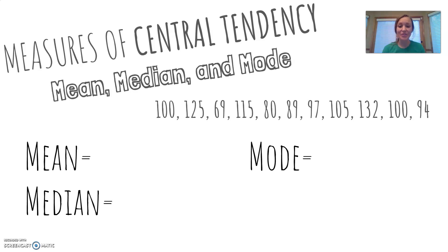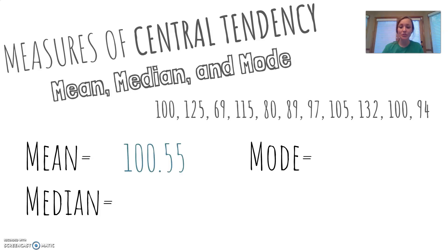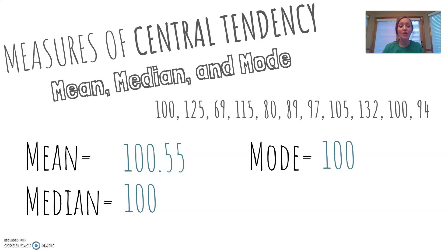If you are ready to check your answers: for the mean, if you added all the numbers together and divided by the count of numbers, you should have gotten 100.55. The median — ordering from highest to lowest and finding the middle number — was also 100, and the number that occurred most often, the mode, was also 100.